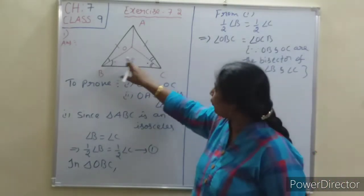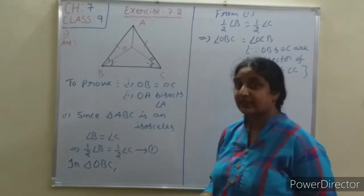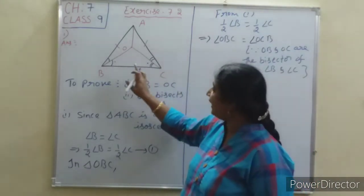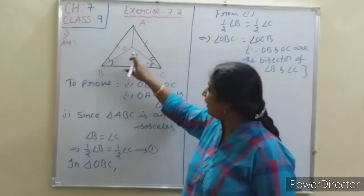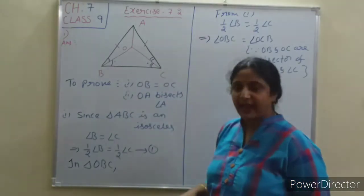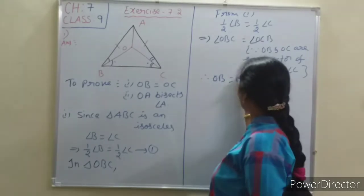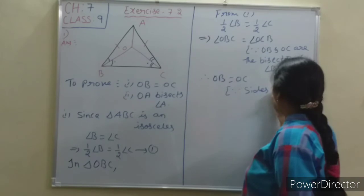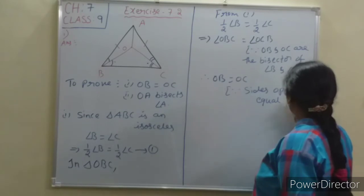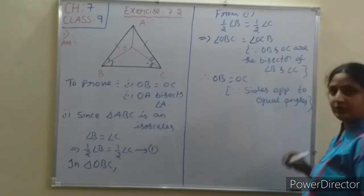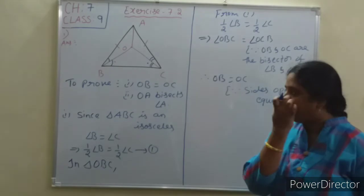These two angles are equal. By Theorem 7.3, sides opposite to equal angles are equal. So, in triangle OBC, OB equals OC — since sides opposite to equal angles are equal. That completes part one.